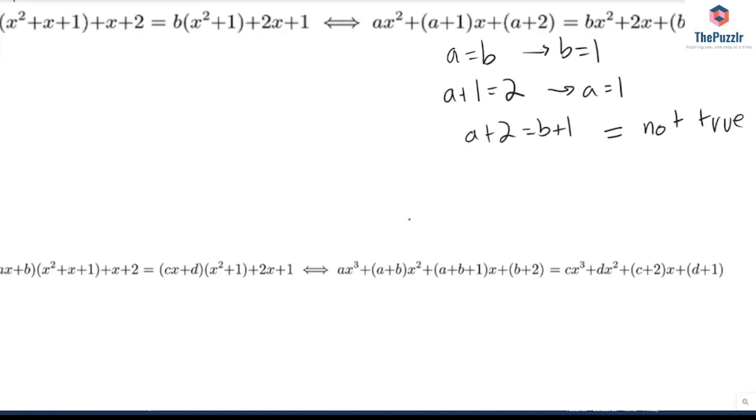So we're given that a, so I'll start on the left, a equals c. We have that a + b equals d. We have that a + b + 1 equals c + 2. And then finally b + 2 equals d + 1.